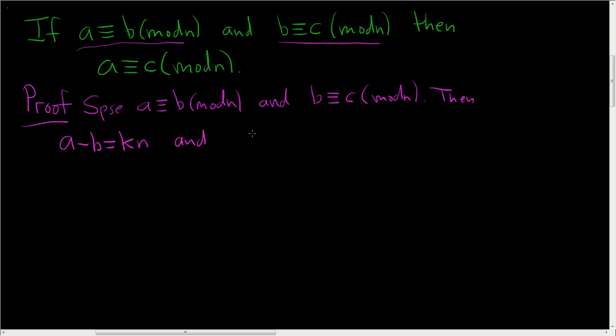And likewise, B minus C is a multiple of N. So we can write it as R times N, where K and R are integers.